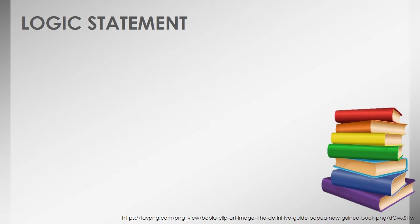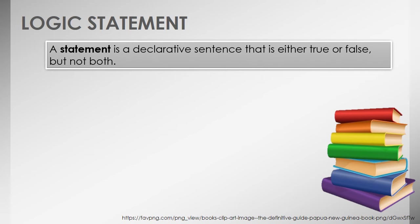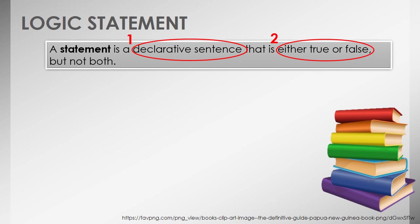Since we are done differentiating the types of sentences, we are now ready to define a logic statement. A statement is a declarative sentence that is either true or false, but not both. To be more precise, a statement must satisfy the following conditions: first, it should be a declarative sentence; and second, it should be either true or false, but not both true and false. There should be only one truth value — the sentence can be true or false, but never both.